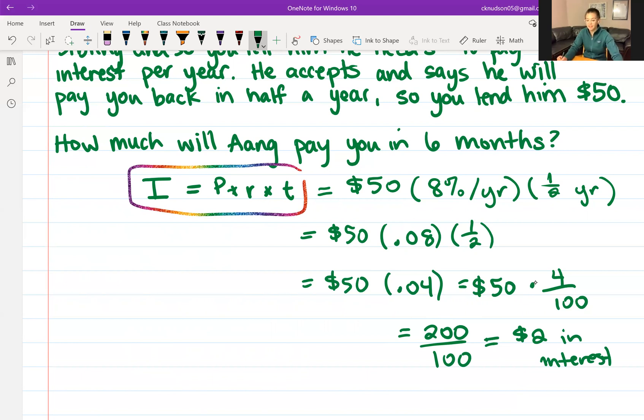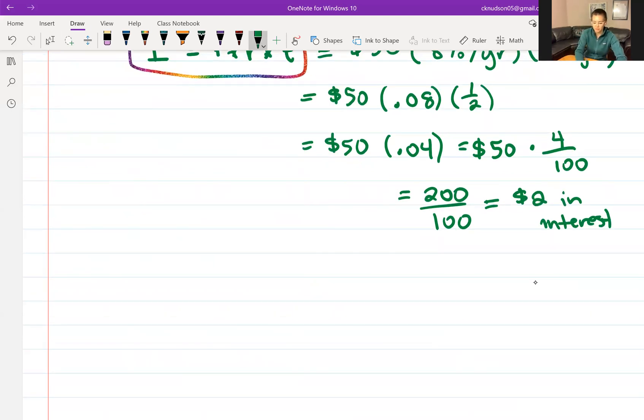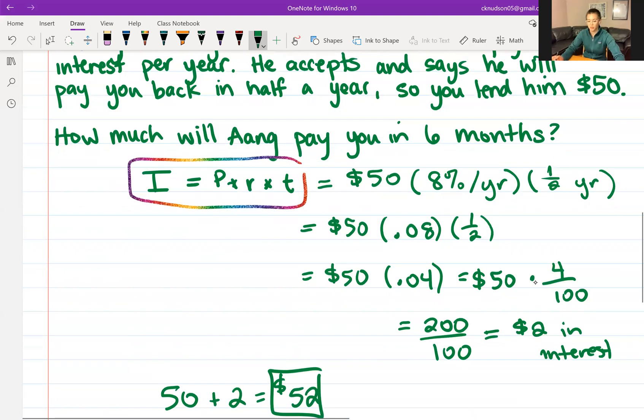So that means that in six months, he needs to pay you back $2 in interest plus the $50 that he originally borrowed. That is how simple interest works. Here's that main equation. And in this next video, we will start to get into compound interest, where we pay interest on the interest. Thank you.